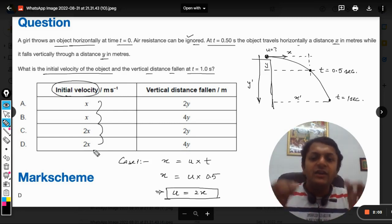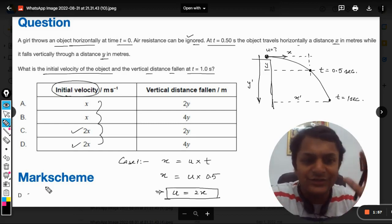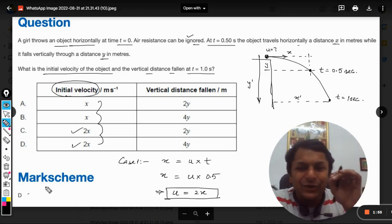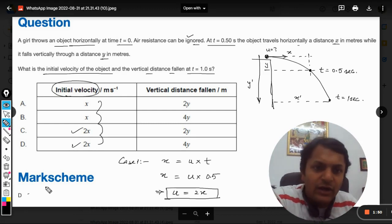And when we check the options, we need to find the initial velocity in terms of x, so that is why we have to do this. Our answer will be either c or d. Although we know that the answer is d, the first case is solved - the initial velocity equals 2x.